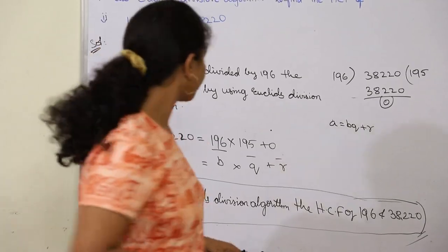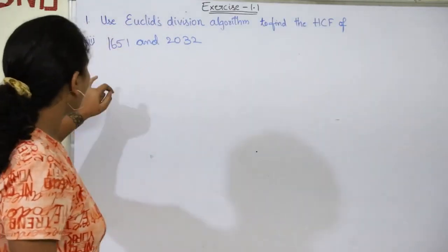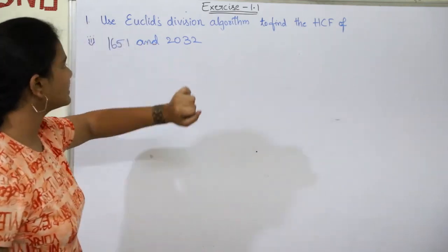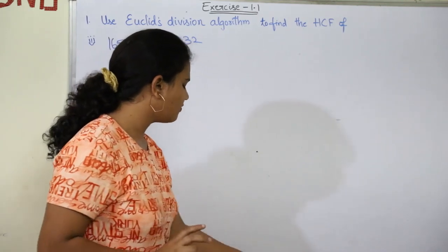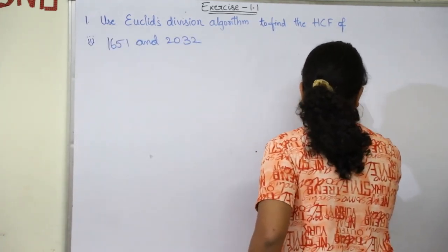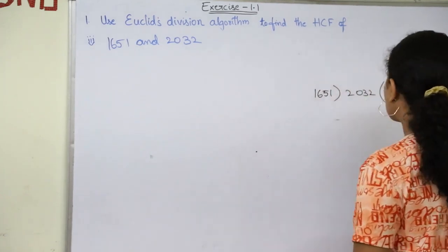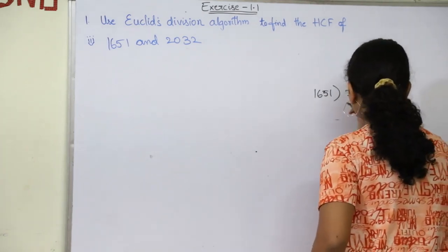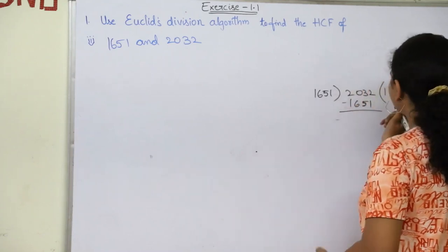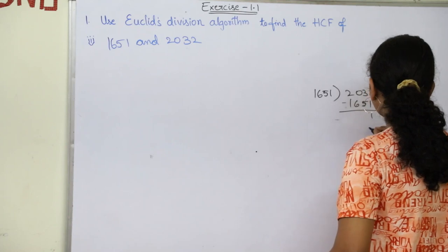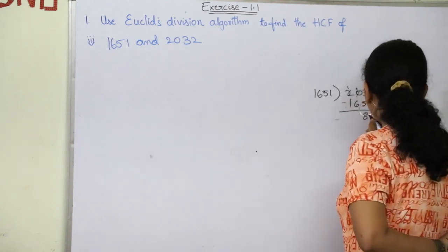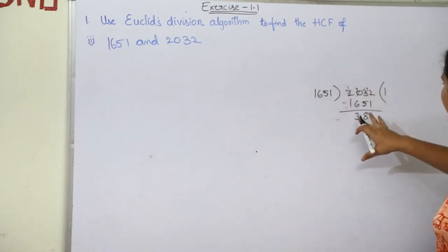Let's go for the third question: find the HCF of 1651 and 2032 by using the division algorithm. First let's divide 2032 by 1651. Doing the subtraction, 2032 minus 1651 gives a remainder of 381. So the remainder over here is 381.